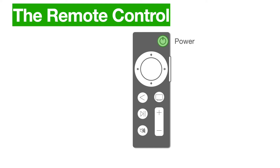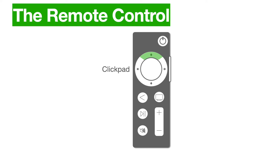At the top you have your power button. On the right side you have voice control. And in the center you have this wheel where you can do up, right, down, and left.